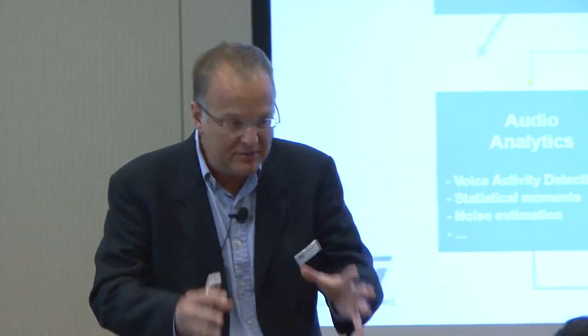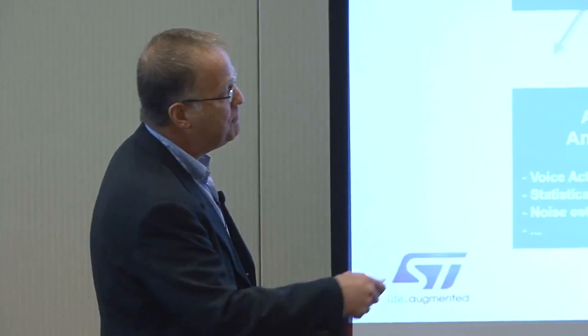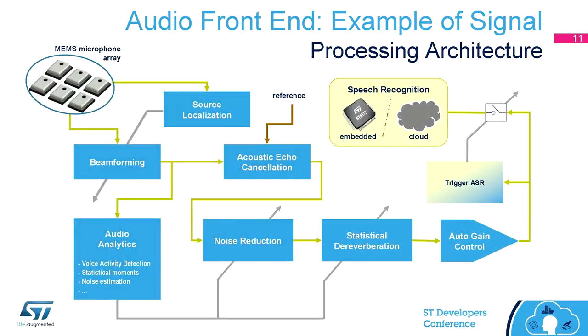We solve it by implementing signal processing. Signal processing, as the previous speaker highlighted, can be done in a number of different ways, always depending on the specific use case. You will need to implement different acoustic and signal processing optimizations to your system. For the purpose of this talk, I put together a potential scheme that may be adopted in a home automation situation, with a number of basic functions — for example, beamforming.